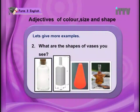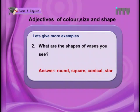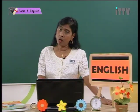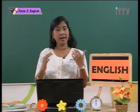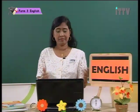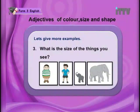What are the shapes of buses you see? Look at the pictures — here we have different types of shapes. The answers are: round, square, conical shape and star. Now you might be wondering about 'conical' — a cone comes to a point, and that shape is conical. Now we have more examples of adjectives based on size.